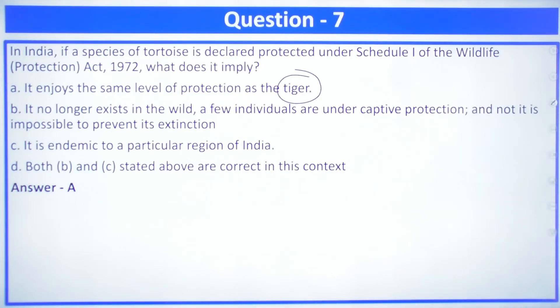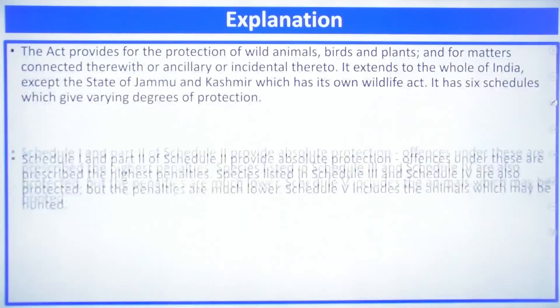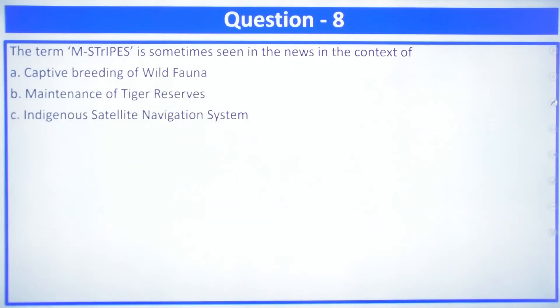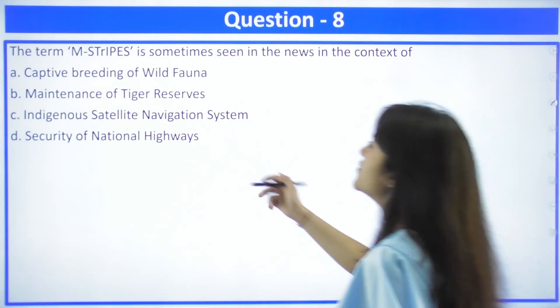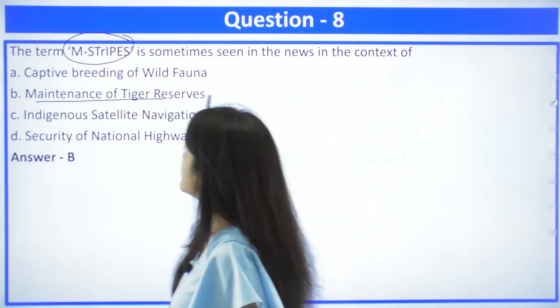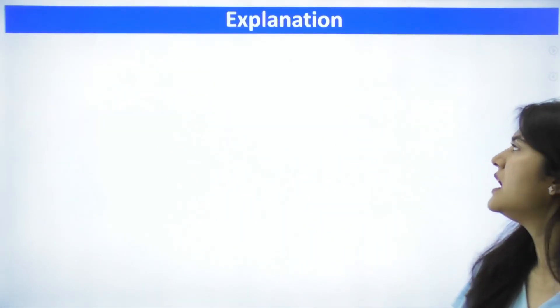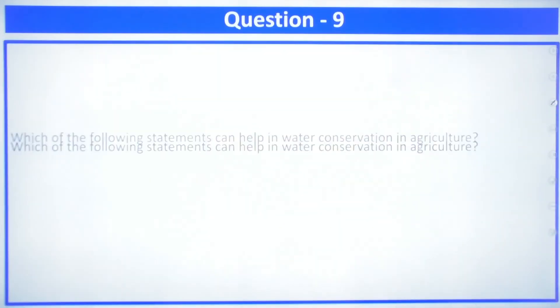Regarding M-Stripes, which is frequently in the news, the answer is B — maintenance of Tiger Reserves. M-Stripes has been developed for the maintenance of Tiger Reserves. If you read any conventional environment book, you will find this information there.